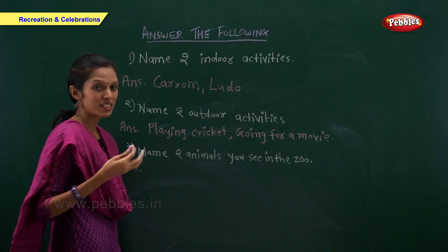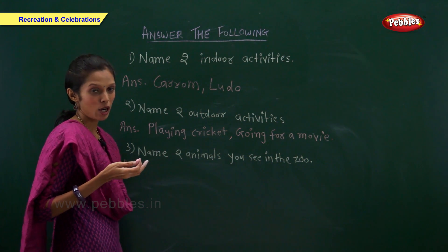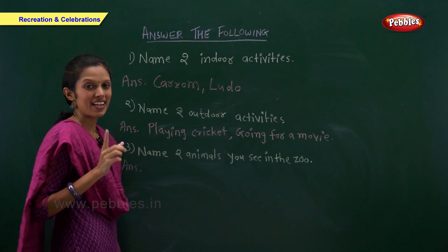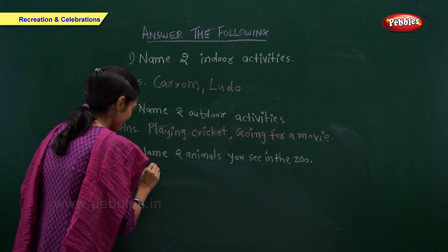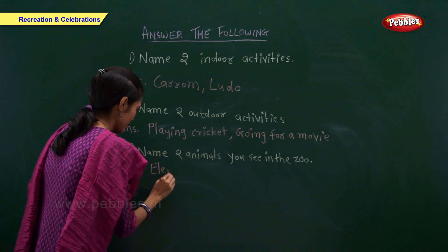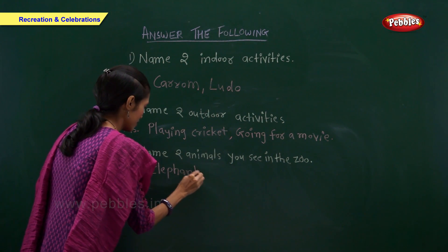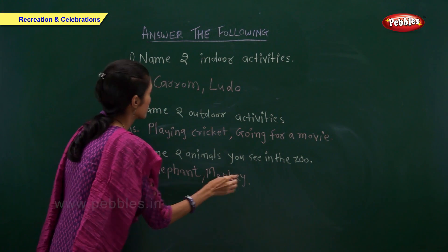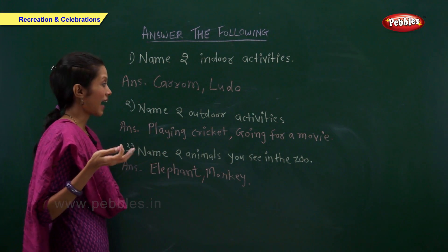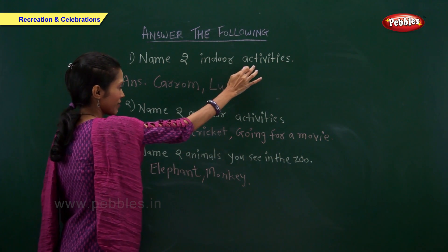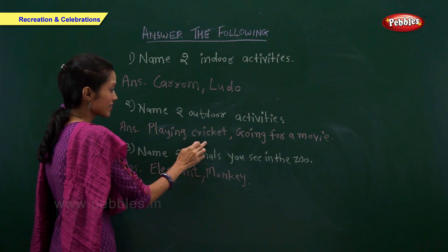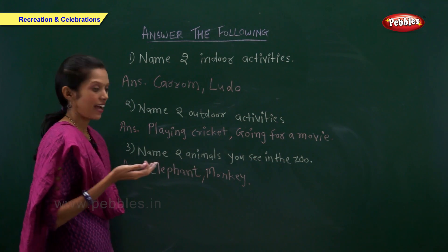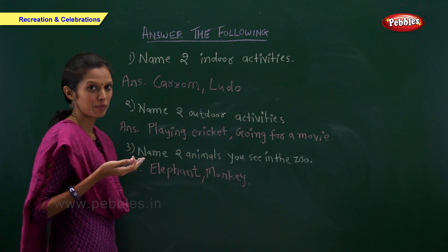Name two animals you see in the zoo. Elephant and monkey. Carom and ludo are two indoor activities. Playing cricket and going for a movie are two outdoor activities. An elephant and monkey are the two animals we commonly see in the zoo.